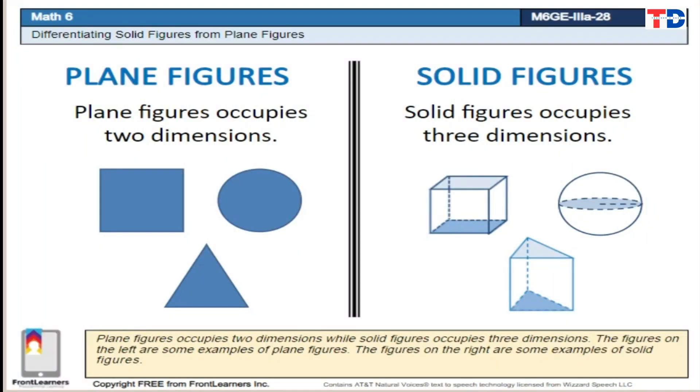Plane figures occupy two dimensions, while solid figures occupy three dimensions. The figures on the left are some examples of plane figures. The figures on the right are some examples of solid figures.